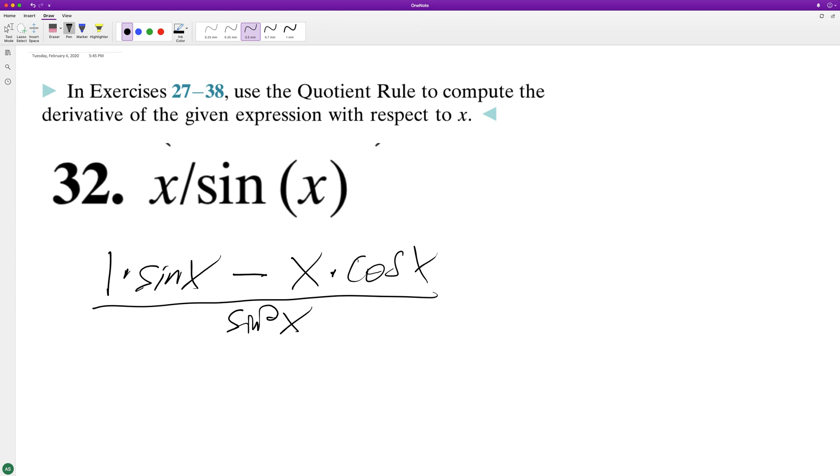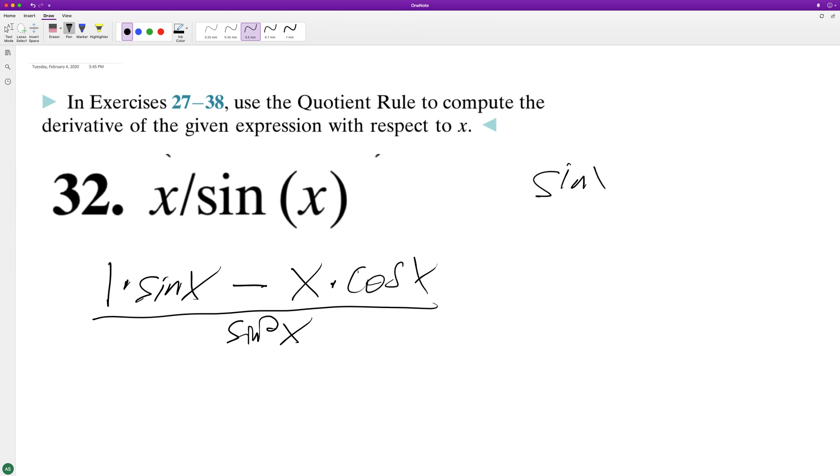We're essentially done, but if you want to go further, you can rewrite this as sine of x over sine squared of x minus cosine of x over sine squared of x.